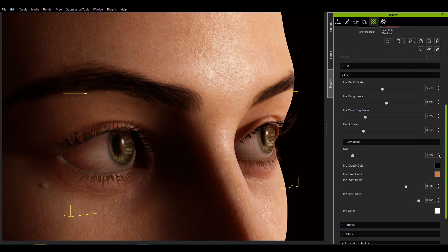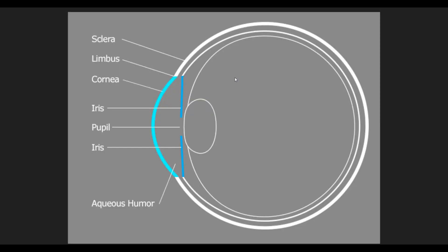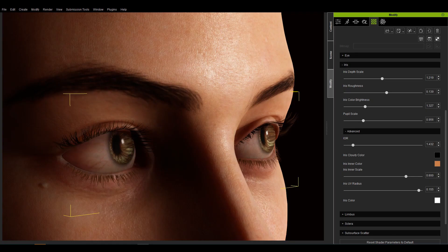Open the advanced section and the first parameter is the IOR, which is used to simulate the refractive index of the iris. Take a look at the structural diagram of the eye. There is a layer of liquid between the cornea and iris called the aqueous humor. Light entering the aqueous humor has a tendency to deflect, and IOR is used to determine the degree of deflection.